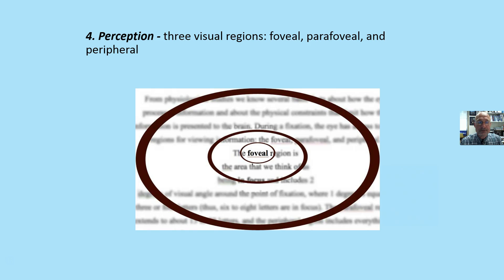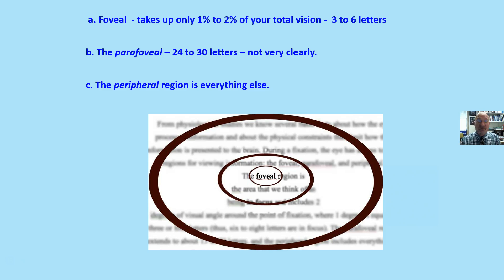Our brain does not replicate reality; our brain creates a picture of reality. When we perceive, there are three visual regions. There's the foveal, right in the middle, one to two percent of your total vision—we see about three to six letters at a time clearly. The parafoveal, 24 to 30 letters, we see not very clearly, it's kind of blurry. Then there's the peripheral, everything else, where it's just kind of a blur.